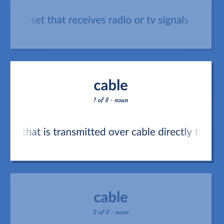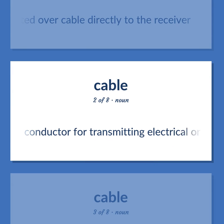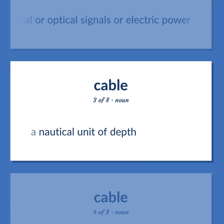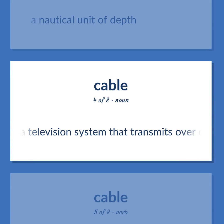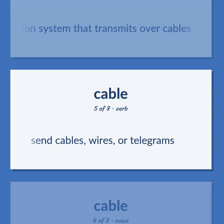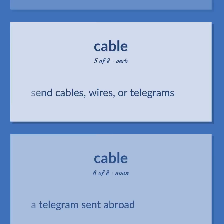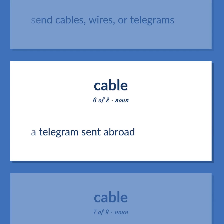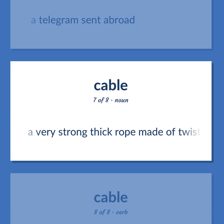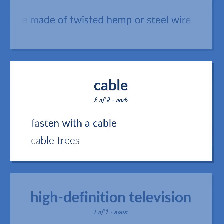Cable TV: television that is transmitted over cable directly to the receiver. Cable: a conductor for transmitting electrical or optical signals or electric power. A nautical unit of depth. A television system that transmits over cables. Send cables, wires, or telegrams. A telegram sent abroad. A very strong thick rope made of twisted hemp or steel wire. Fasten with a cable. Cable trees.